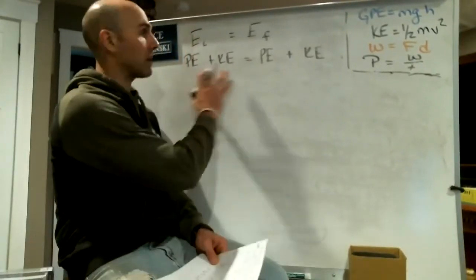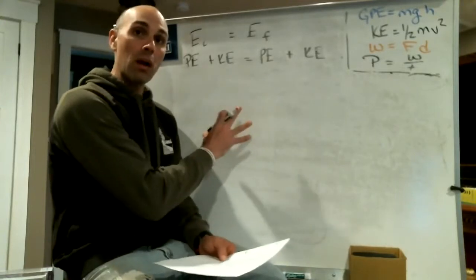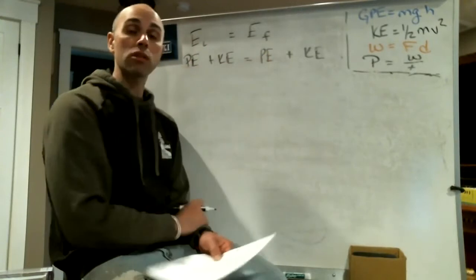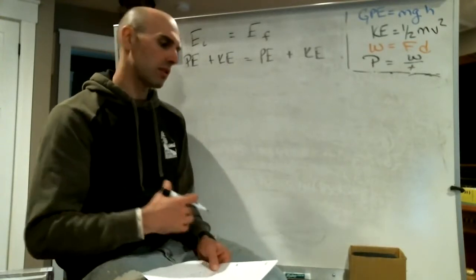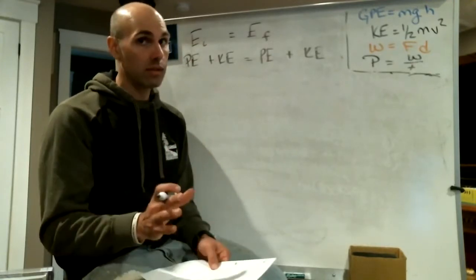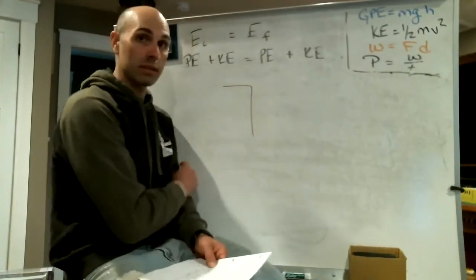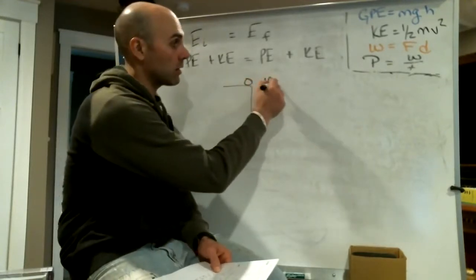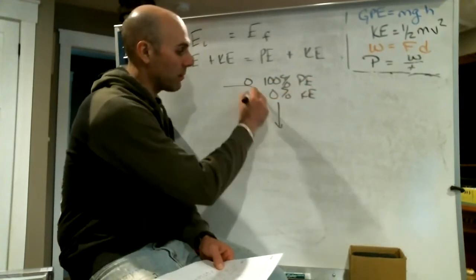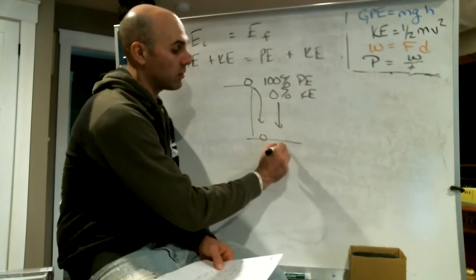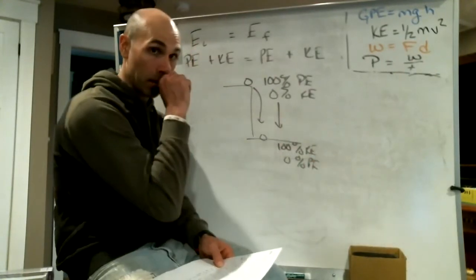We're going to expand upon this whole equation. What we've learned thus far is that all of the energy before has to equal all the energy after. We've talked about potential energy and kinetic energy — elastic potential, chemical energy — but we've really concentrated on gravitational potential and kinetic. We've always said a ball at the top of a building is 100% potential and 0% kinetic, and as it falls it becomes 100% kinetic and 0% potential.